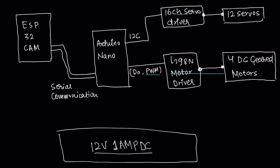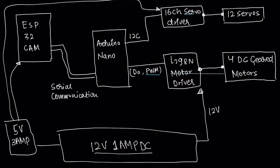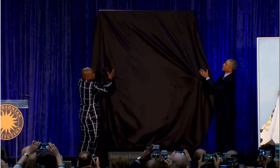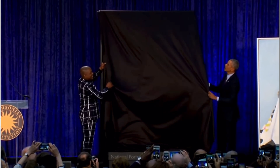For power, I'm using a 12-volt 1-ampere DC supply because the DC geared motors need 12 volts, so it goes directly to the motor driver. The Arduino Nano, ESP32-CAM, and servos need 5 volts, so I'm using a 5-volt 3-ampere buck converter. It's important to use 3 amps because if the ESP32-CAM doesn't get enough current, it won't generate the WiFi properly and the image will lag.